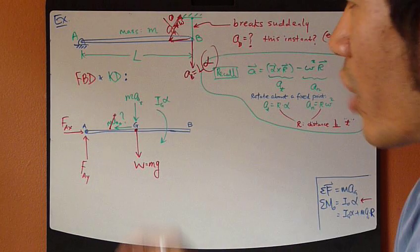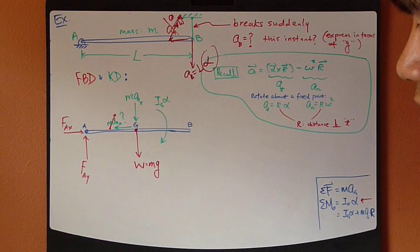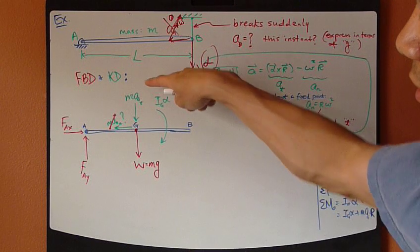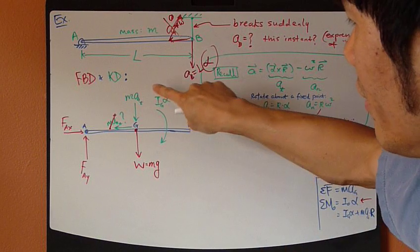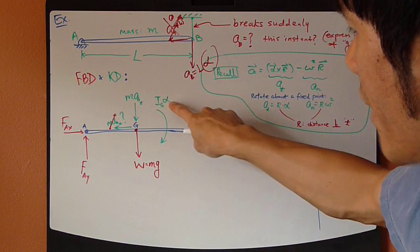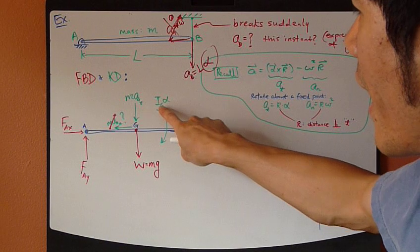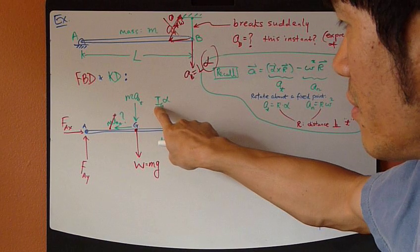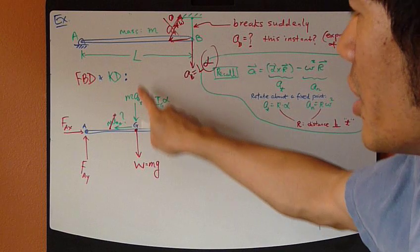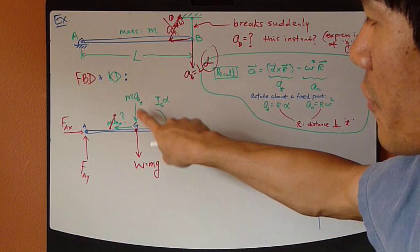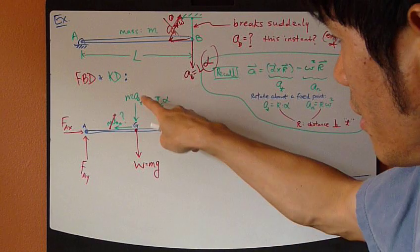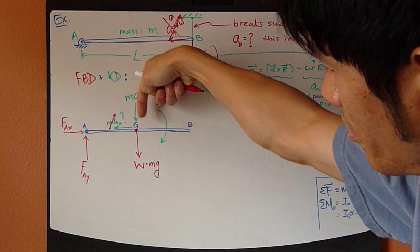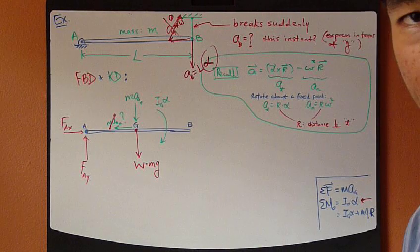Kinetic diagram will include the acceleration terms. Here, I split into the rotational and linear acceleration. The rotational acceleration is I-alpha, I about center of gravity, I-alpha. The linear acceleration is through the center of gravity. And keep in mind, again, there are two components. M-A tangent component and M-A normal component.